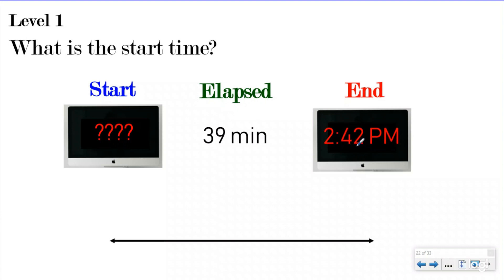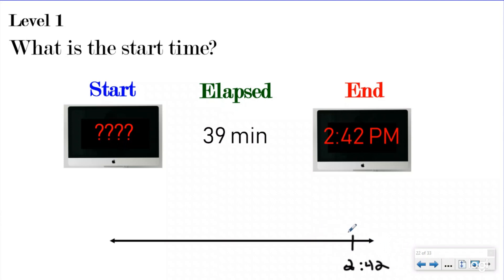Today we're focusing on finding the start time, and we'll use the same format of level one, level two, and level three — level three being a word problem. Let's start with level one, which is when they show you a digital clock. Right now they're telling us it's 2:42. We did something for 39 minutes and we want to know what time we started. On our timeline we label the end time as 2:42. The awesome thing about our hills and mountain strategy is we do the exact same thing — except now we're going backwards.